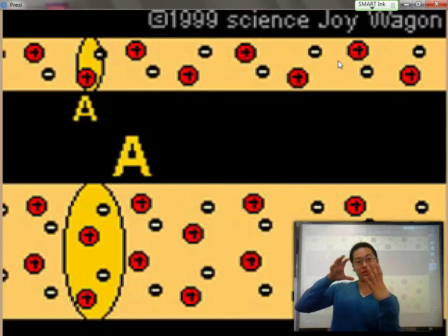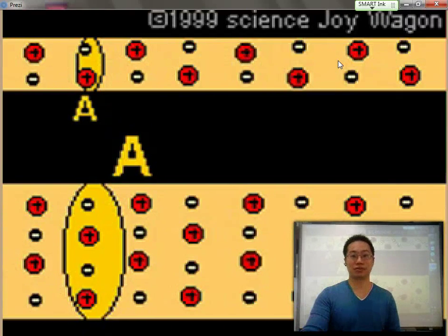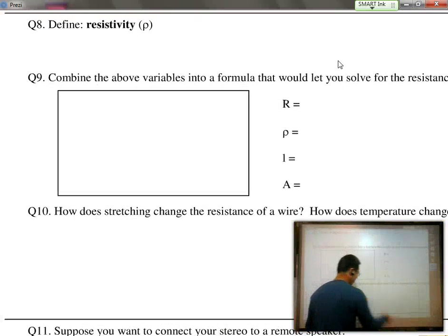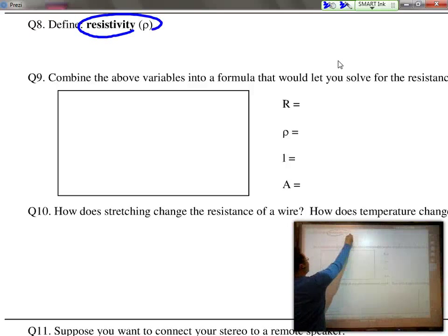So we know that cross-sectional area has something to do with resistance. In fact, the thicker the wire, the less the resistance is. Another factor, of course, is something called resistivity and the length of the wire itself.